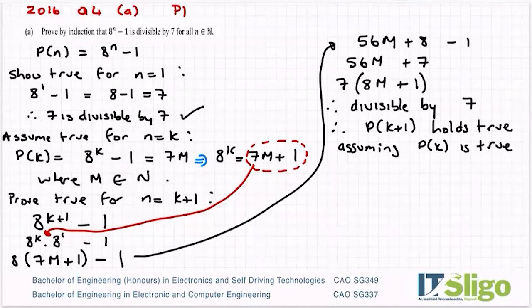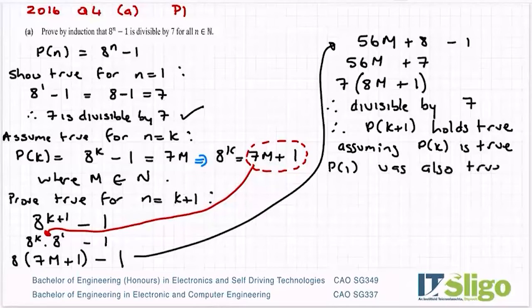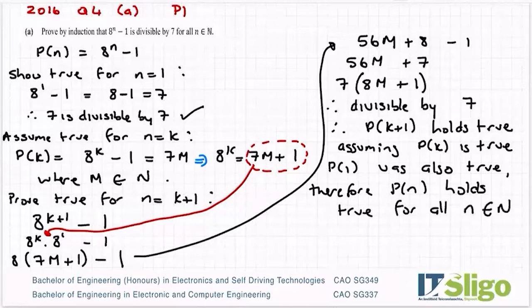So the same conclusion we have all along. P of 1 was also true. Therefore, P of n holds true for all n is a natural number.